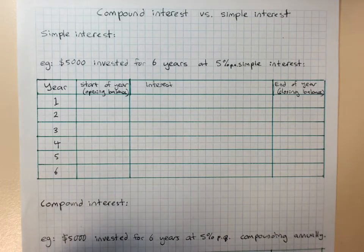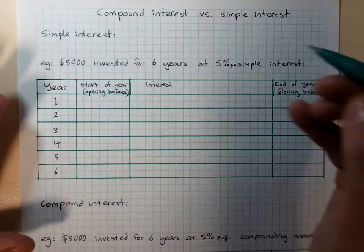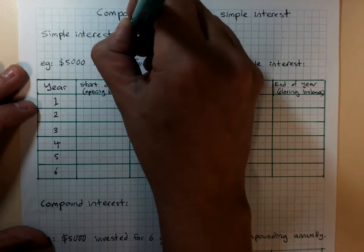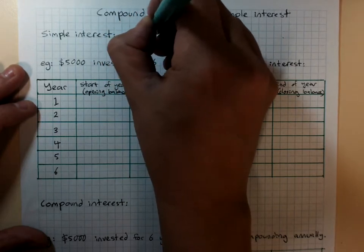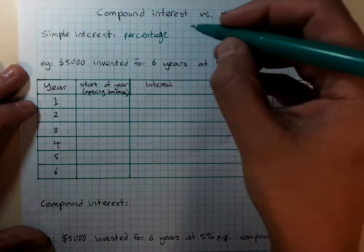Compound interest versus simple interest. Simple interest is when we have a percentage of our original amount paid as interest every year.